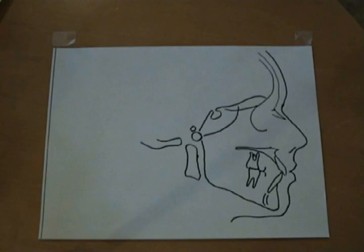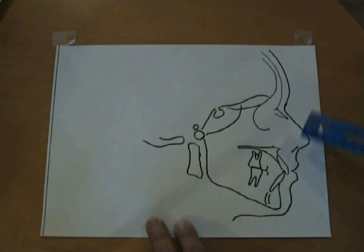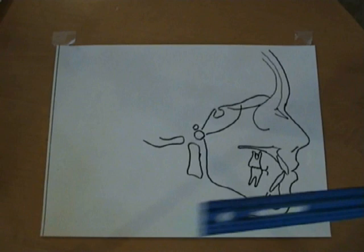Once I trace the cephalometric analysis on the acetate, I will take the acetate and take it to a copier machine and make a copy. And this is what I have. I find that this is so much easier to do the analysis than on the acetate or the radiographic tracing paper.